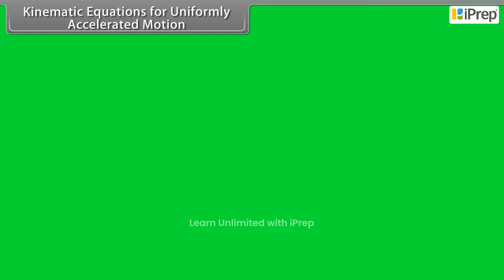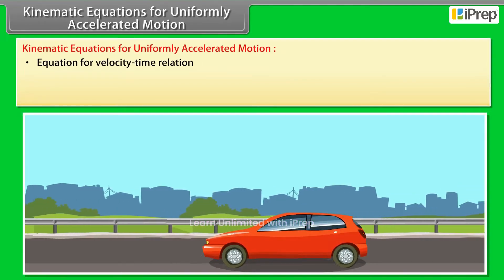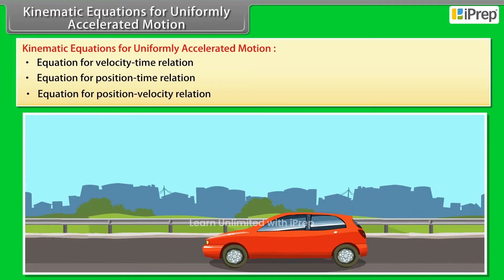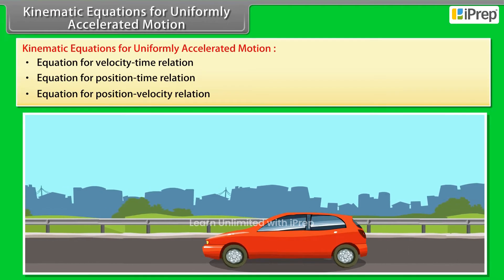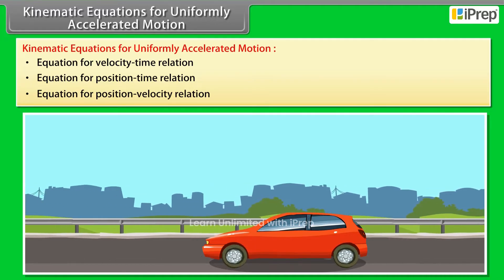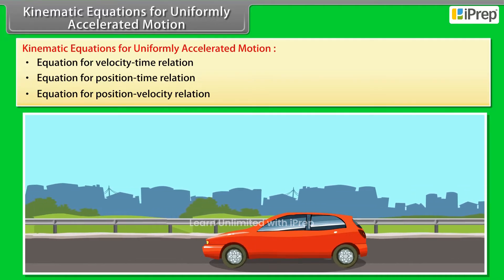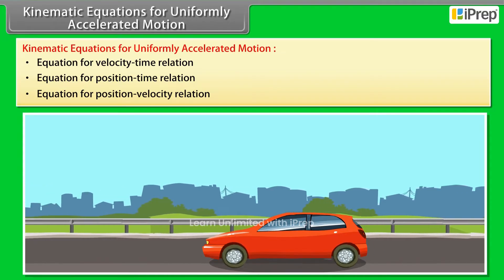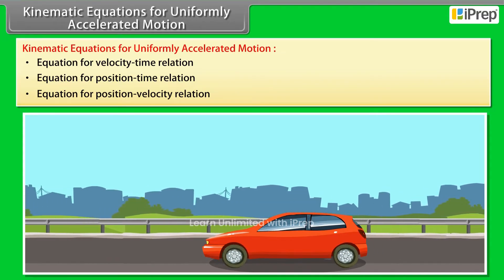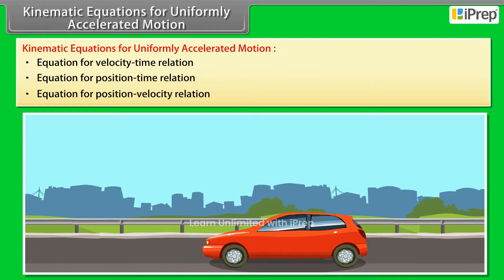Kinematic equations for uniformly accelerated motion. If an object is moving with initial velocity U and after time T, its velocity changes to V, uniform acceleration is A and distance travelled is S. Then we have the following kinematic equations for uniformly accelerated motion.